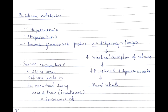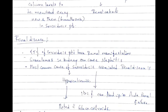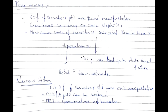Regarding calcium metabolism: hypercalcemia and hypercalciuria occur because granulomas produce 1,25-dihydroxyvitamin D, leading to increased intestinal absorption of calcium, decreased parathormone level, and renal calculi formation. Serum calcium and 24-hour urine calcium levels should be monitored every six months in sarcoidosis patients.